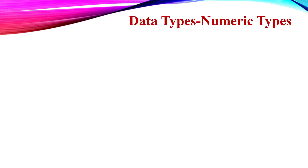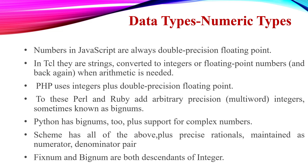Now, numeric types in scripting languages. In JavaScript, there is a double-precision floating point type. In JavaScript, string is also a type. In Perl and Ruby, you can have arbitrary precision integers, sometimes known as bignum.